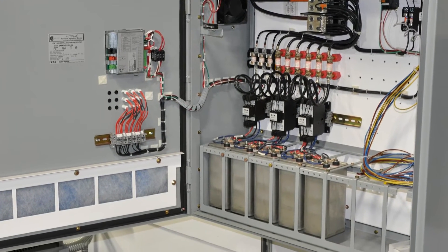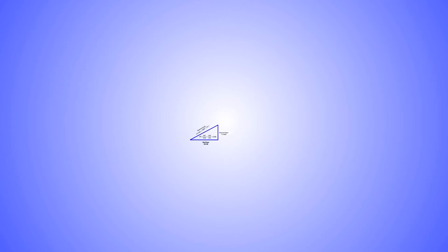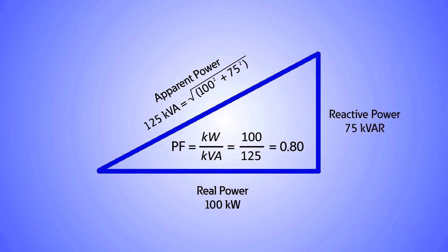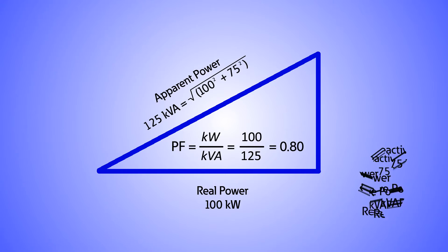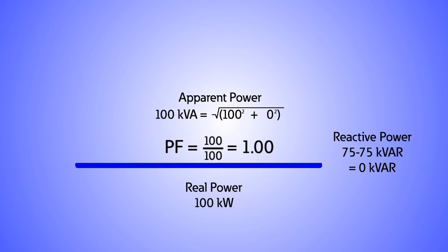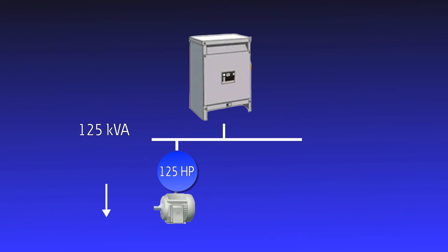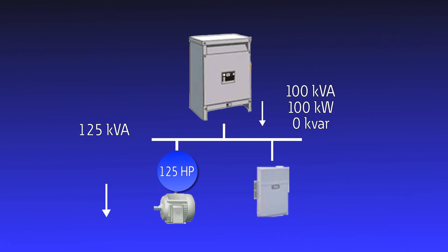Capacitors draw reactive power that is equal and opposite to the reactive power drawn by inductive loads. Going back to the power triangle, if we reduce or eliminate the reactive power required by inductive loads, our power factor will be perfect or unity. This is because our KVA would consist of only real power. Therefore, the net effect of applying capacitors is that the only reactive power the generating source has to provide is the difference — in a perfect situation, this would be zero, and the source only has to provide real power.